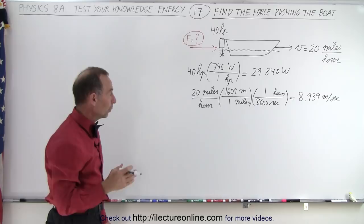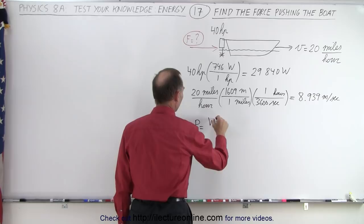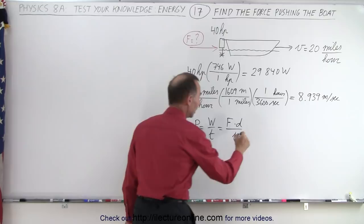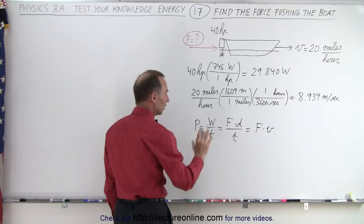Well, we can use the following definition. We can say that power by definition is equal to work divided by time. And work can be defined as force times distance over time. And of course distance over time can be converted to velocity. It's equal to force times velocity.